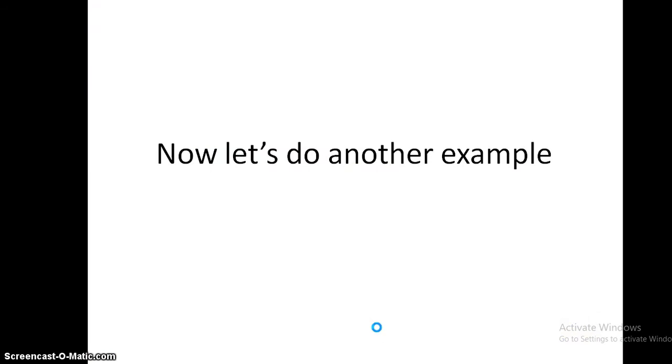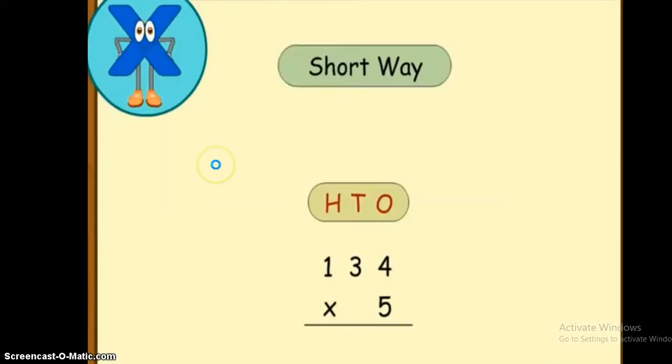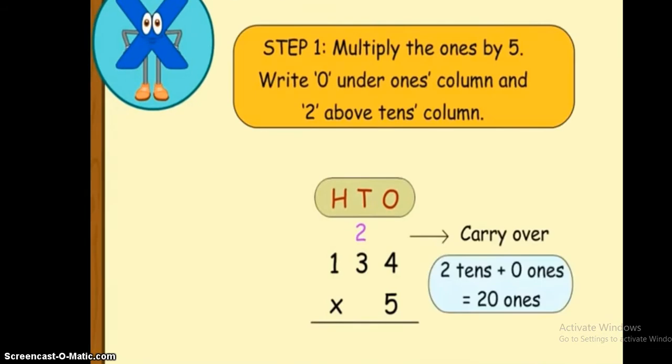Now let's try another example. We have 134 by five. 134 is the number that consists of three digits: ones, tens, and hundreds. And five is the number that consists of one digit. We will line up the numbers.